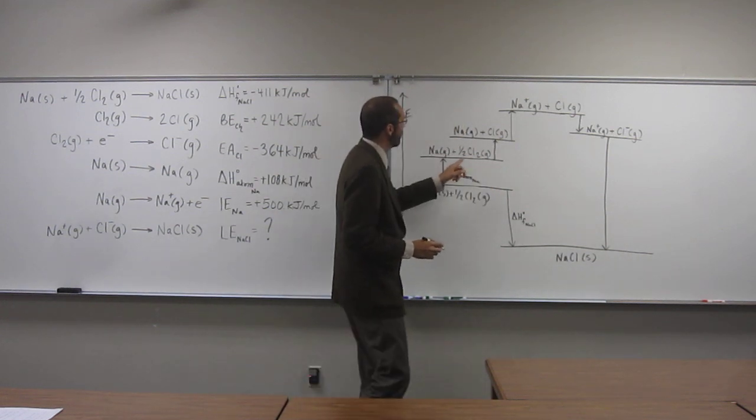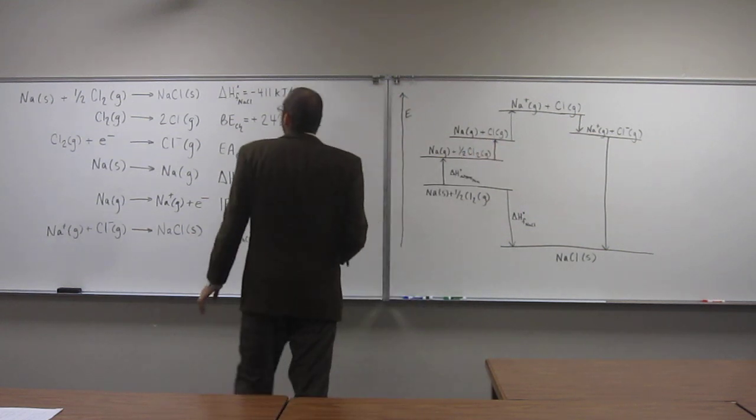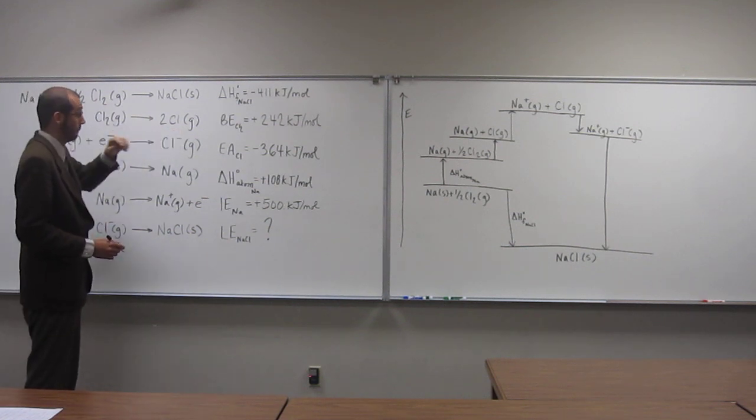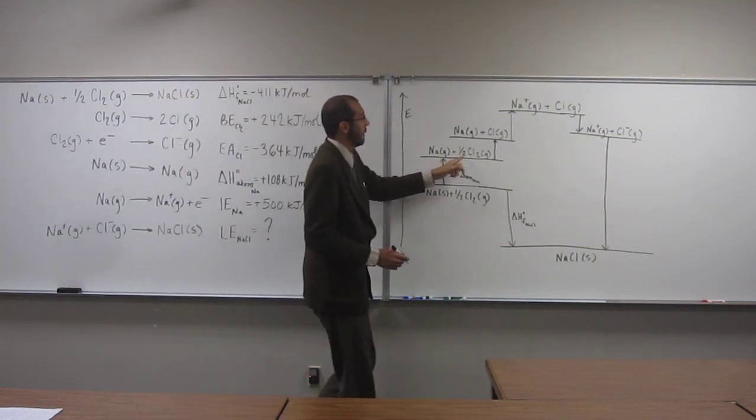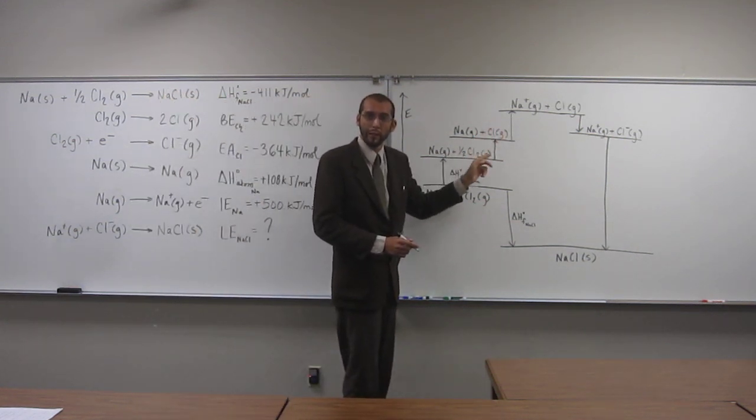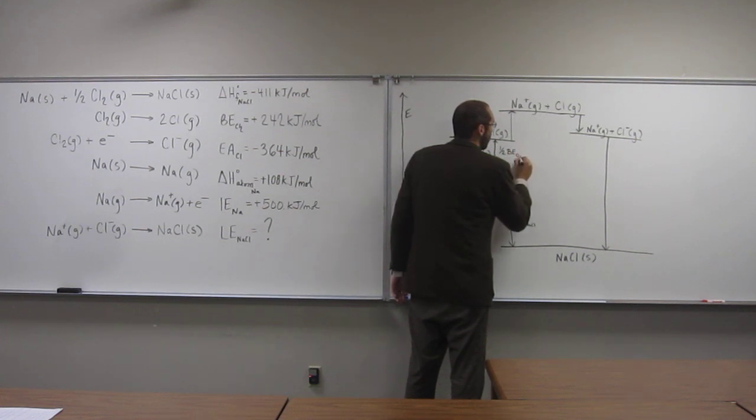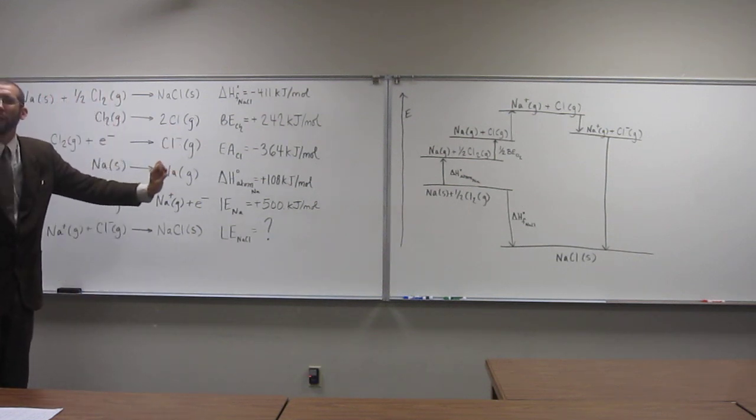So hopefully you see this one. We have one-half chlorine-2 gas going to just one chlorine atom gas. Over here, the bond energy of chlorine is Cl2 goes to 2 Cl. So the bond energy of that is 242, but here we're doing one-half of that. Is everybody okay with seeing that? So what we're going to do here is just multiply the bond energy of that Cl2 times one-half. So hopefully those are big enough for you guys to see.